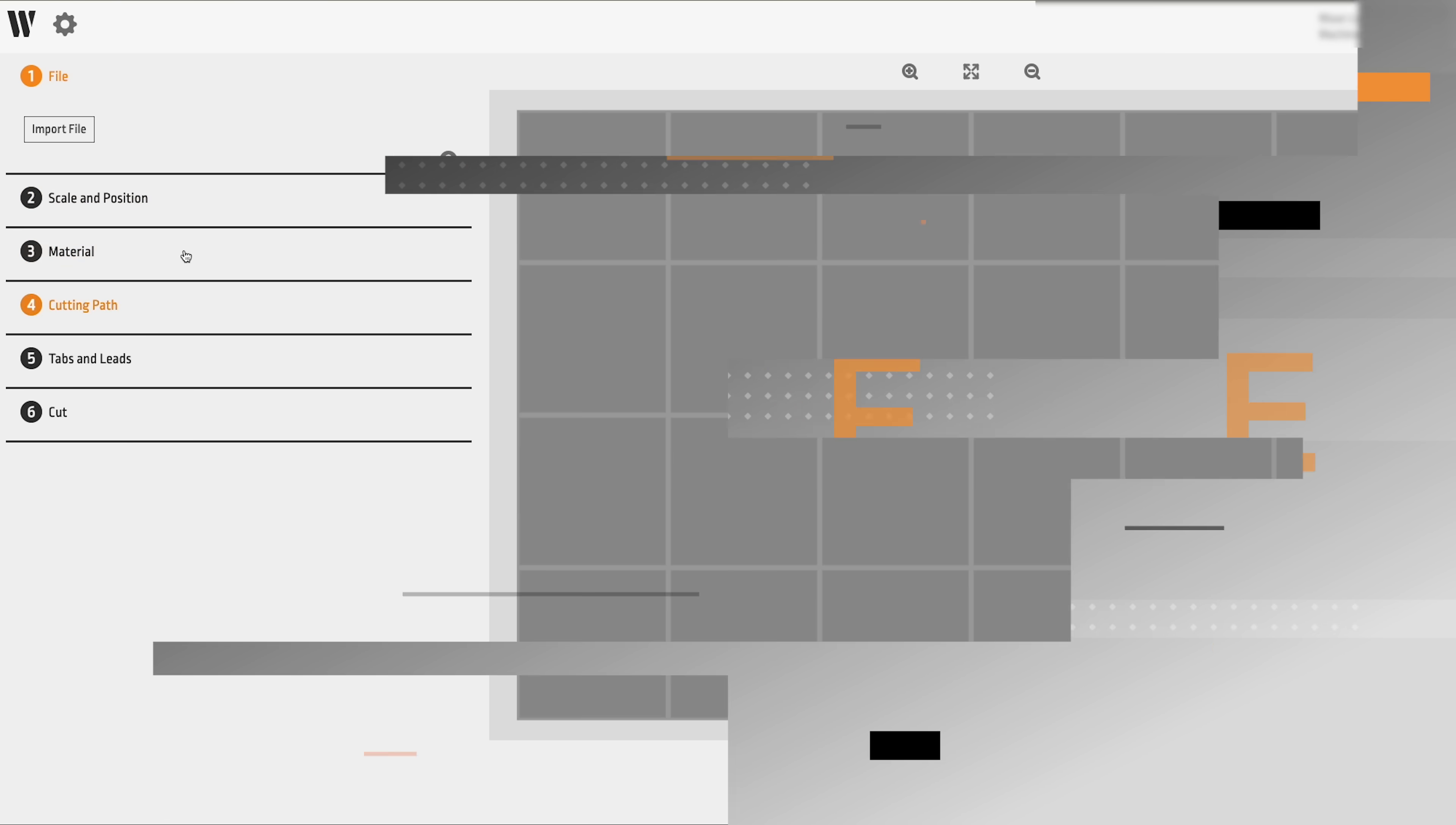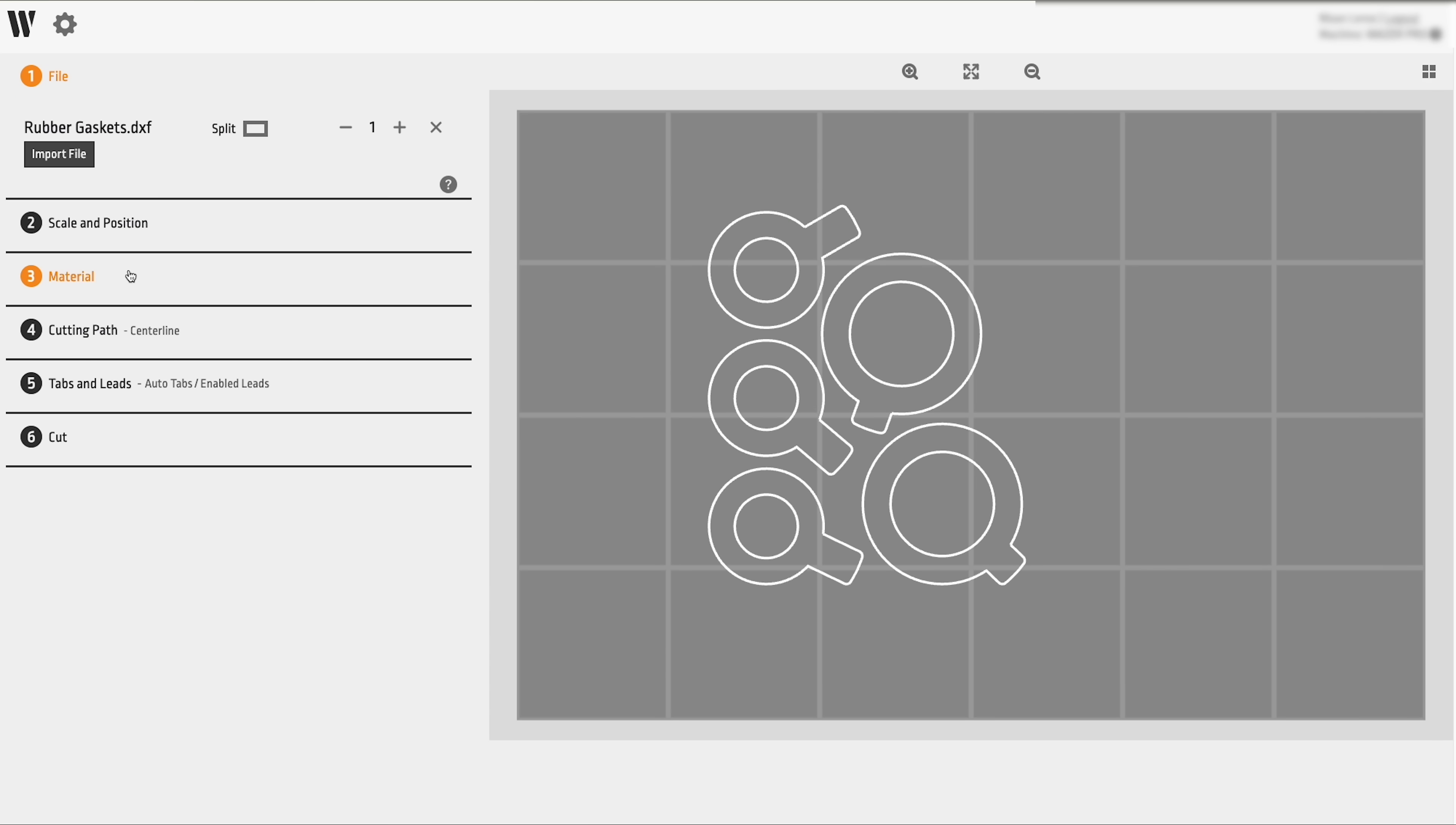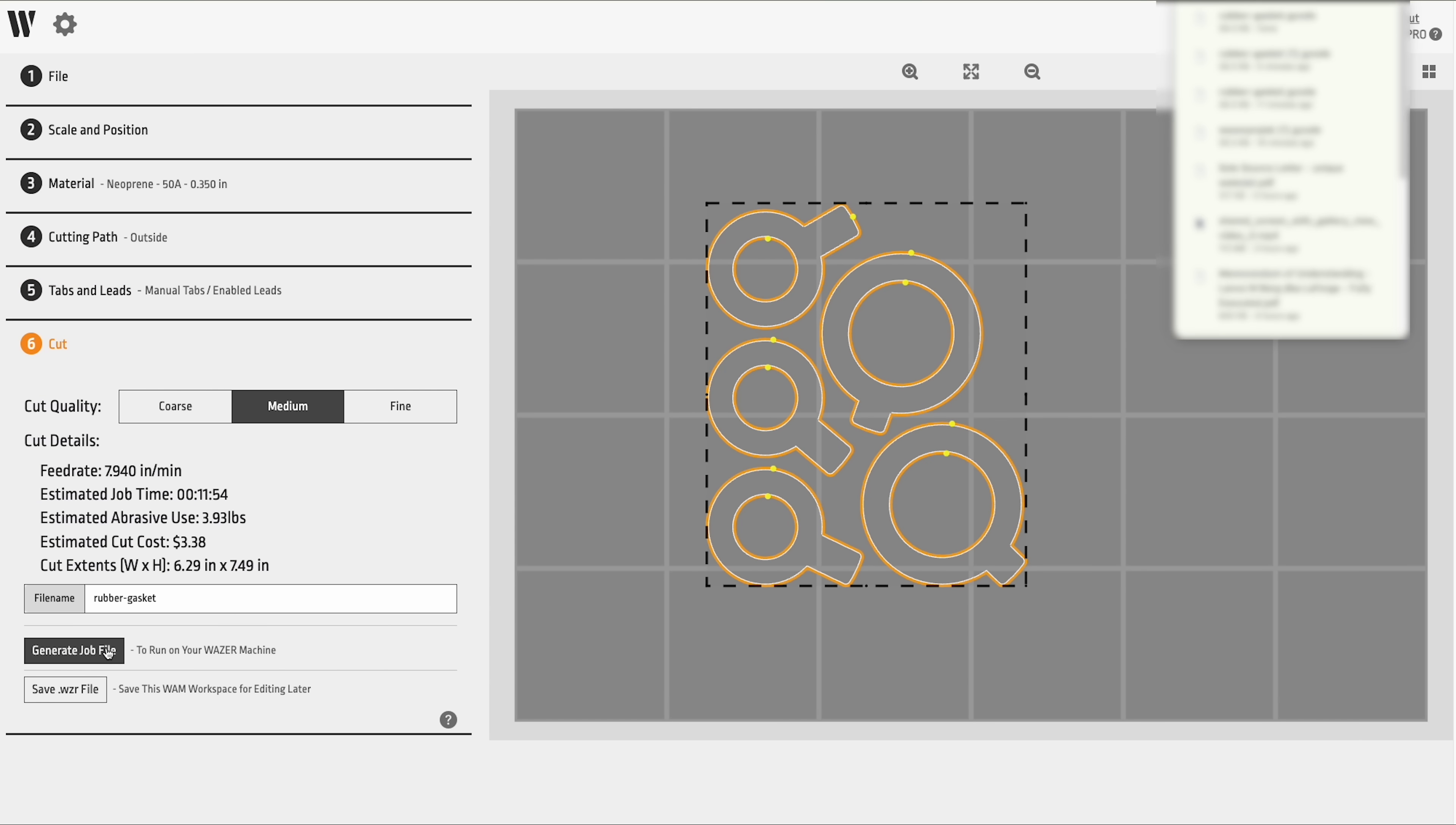Ease of use. Wazer Pro includes a new version of the WAM software, purpose-built waterjet software that allows you to go from design to cutting in minutes. Simply load your drawing, choose from hundreds of material and thickness entries, select your offset, set the location of the tabs, pick your cut quality, export your job file, and start cutting.